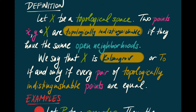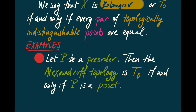In other words, if x and y are distinct points of X, then there is either an open neighborhood of x that doesn't contain y, or an open neighborhood of y that doesn't contain x. As an example: if P is a pre-order, then the Alexandrov topology on P is T0 or Kolmogorov if and only if P is actually a poset.